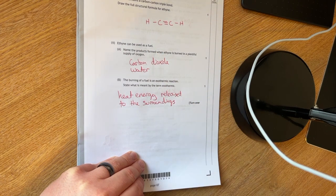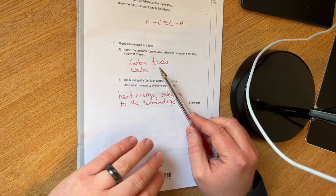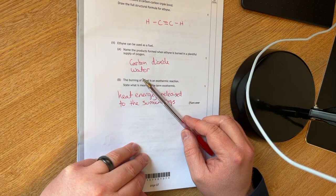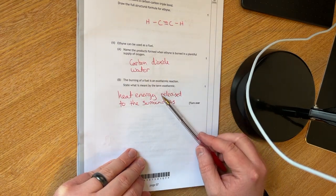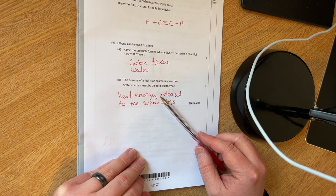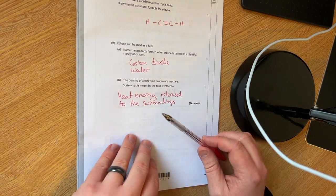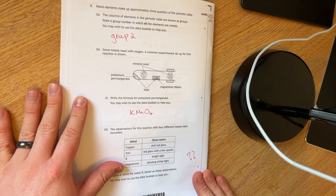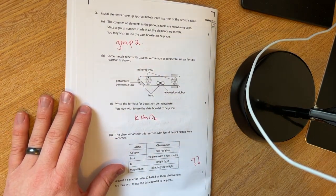Ethyne can be used as a fuel. You have to name the products that form. This is just a combustion reaction of a hydrocarbon. And that's always going to give you carbon dioxide and water. The burning of a fuel is an exothermic reaction. State what is meant by the term exothermic. Well, that's when you have energy released to the surroundings.